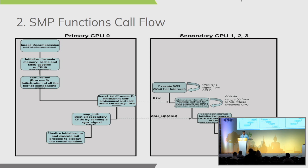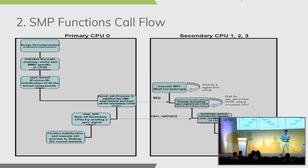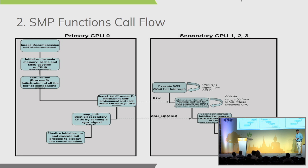This slide covers the basic SMP function call flow starting from image decompression, taken from the ARM community. Starting from the kernel Zimage decompression — which starts from compressor/head.S — we initialize the main memory cache and MMU specific to CPU0, then get into start_kernel. One important point: we go through the core kernel code, the platform-dependent code, and the architecture code — specifically arch/kernel/setup.c for ARM architecture. plat_smp.c is specific to board-related files, while start_kernel is platform independent and common to ARM, x86, or PowerPC.